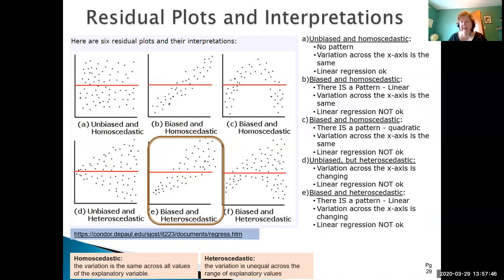Example e is biased. Again it looks like there's a linear pattern here. It also seems that the variation is increasing as we go along the x-axis. So both biased and heteroscedastic. Linear regression is not okay.